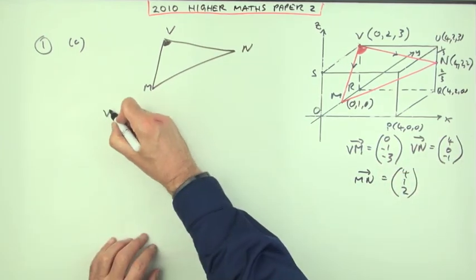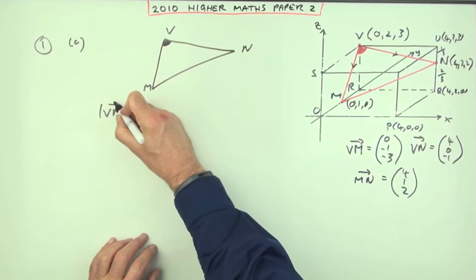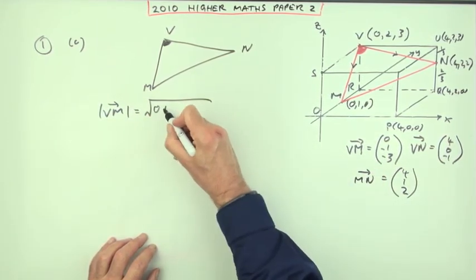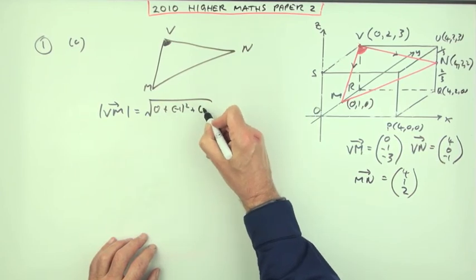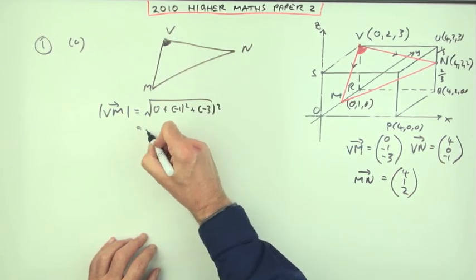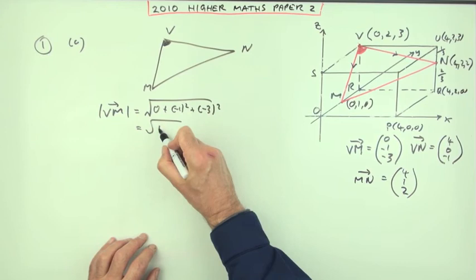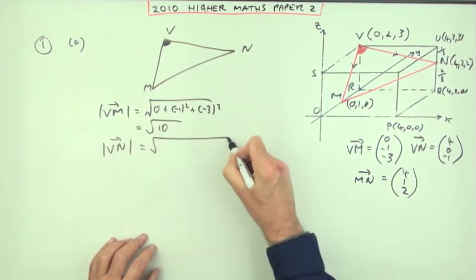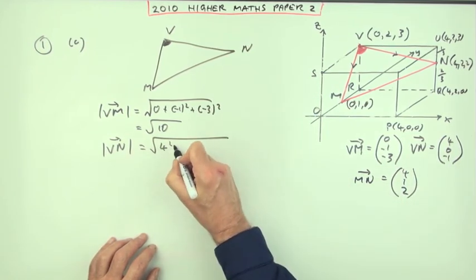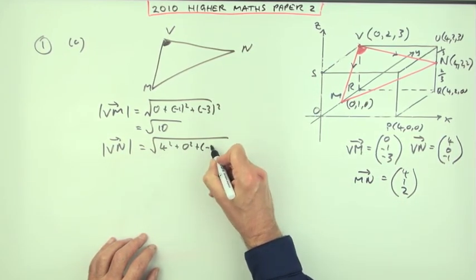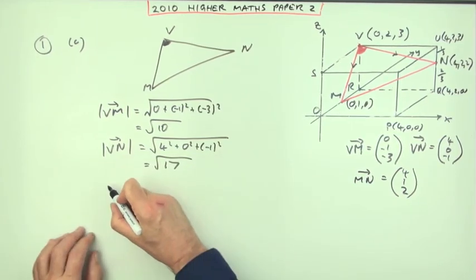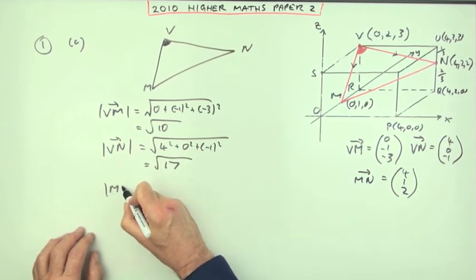Maybe put a bit of working down, of course. So the length of VM would be the square root of, I know I've done it before, 0 plus negative 1 squared plus negative 3 squared. So it's the square root of 9 and 1, which is 10. The length of VN is the square root of, the square of the components, 4 squared, 0 squared, negative 1 squared, 16 and 1 is 17.